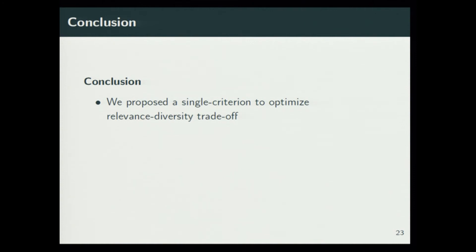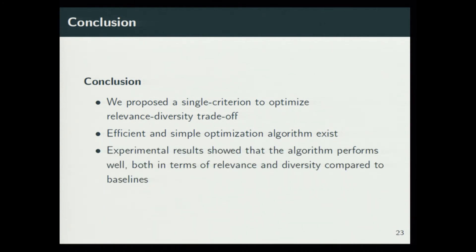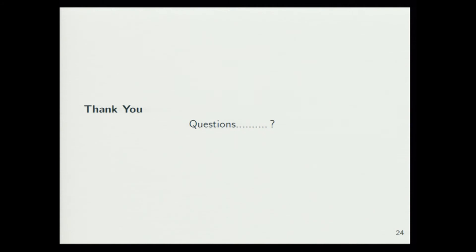In conclusion, we propose a single-criteria objective where we don't have to explicitly trade off relevance and diversity. Since we frame our problem as a submodular maximization problem, there exist very efficient and easy algorithms. Our experimental results show that our algorithm performs stronger compared to the baselines. Thank you. Questions, please.